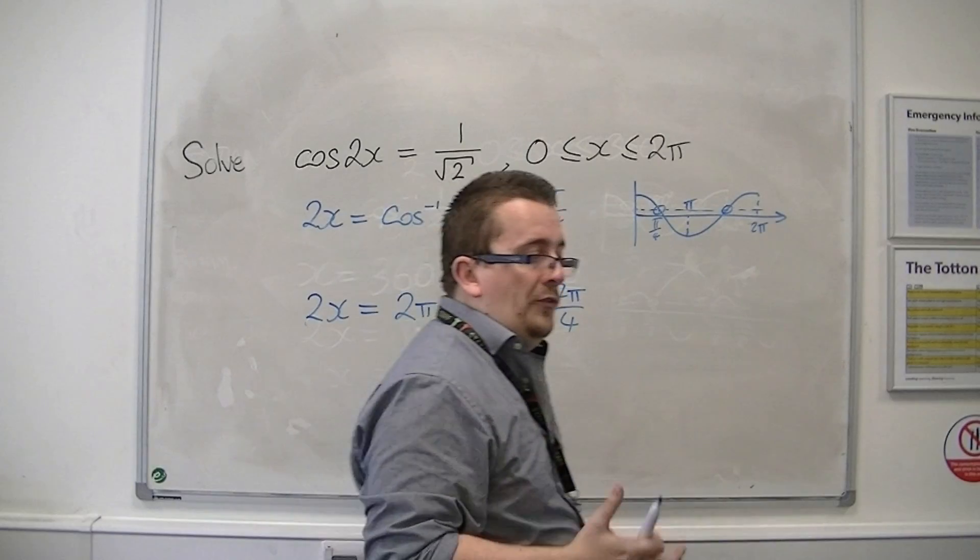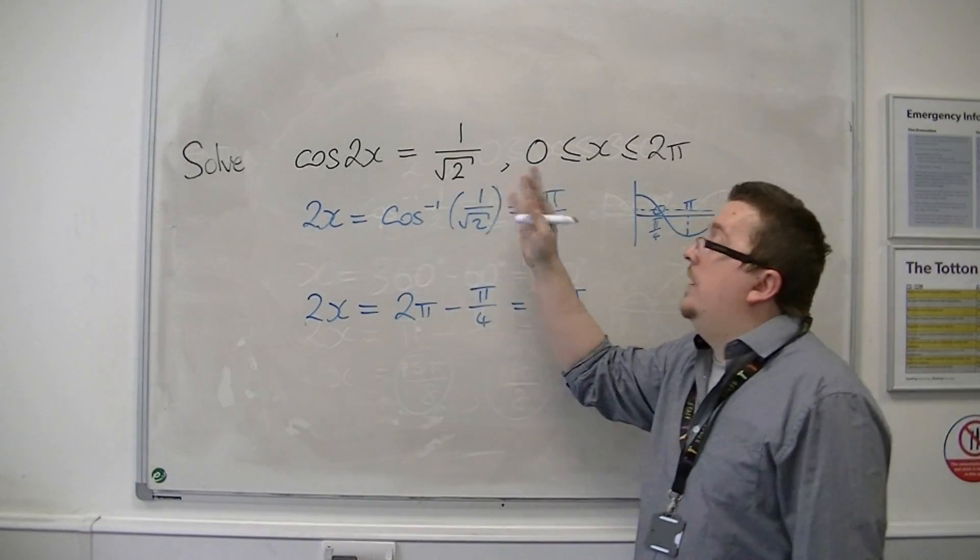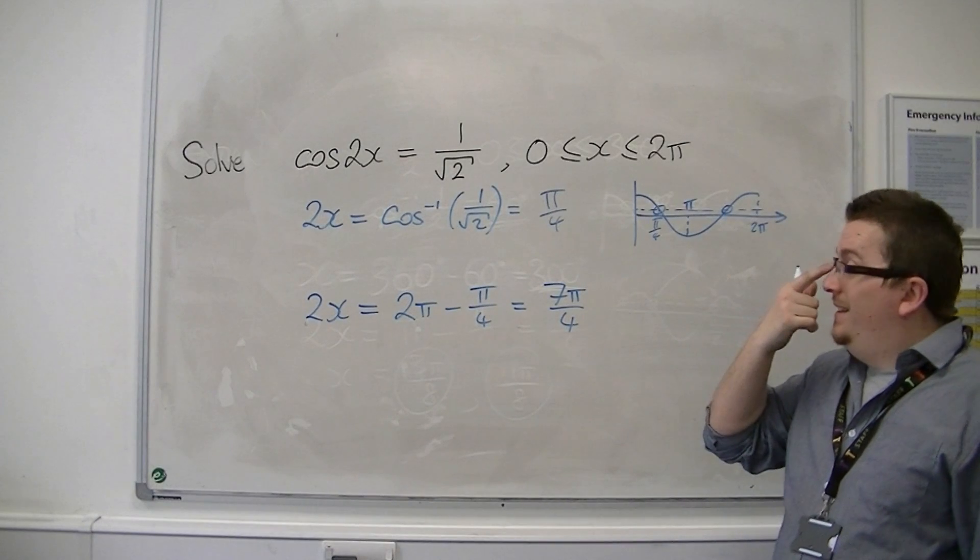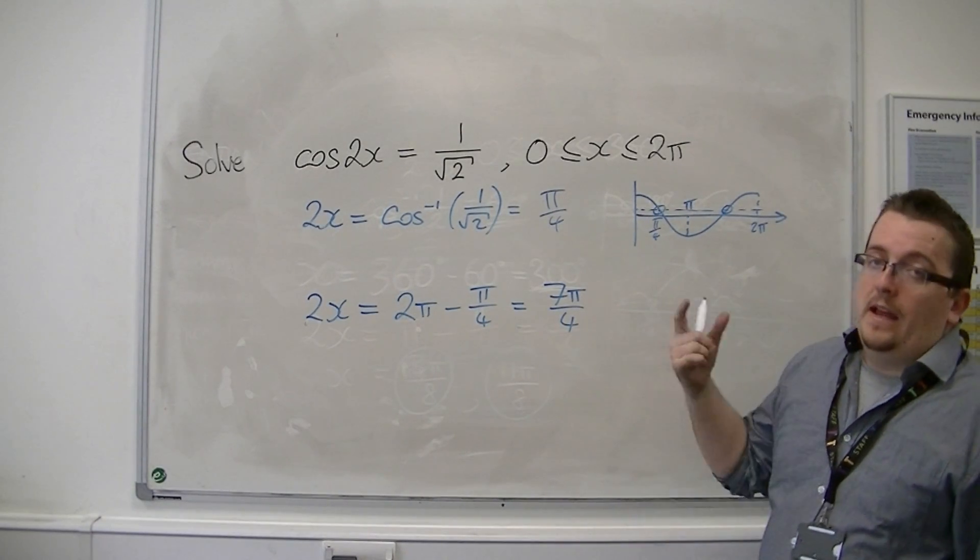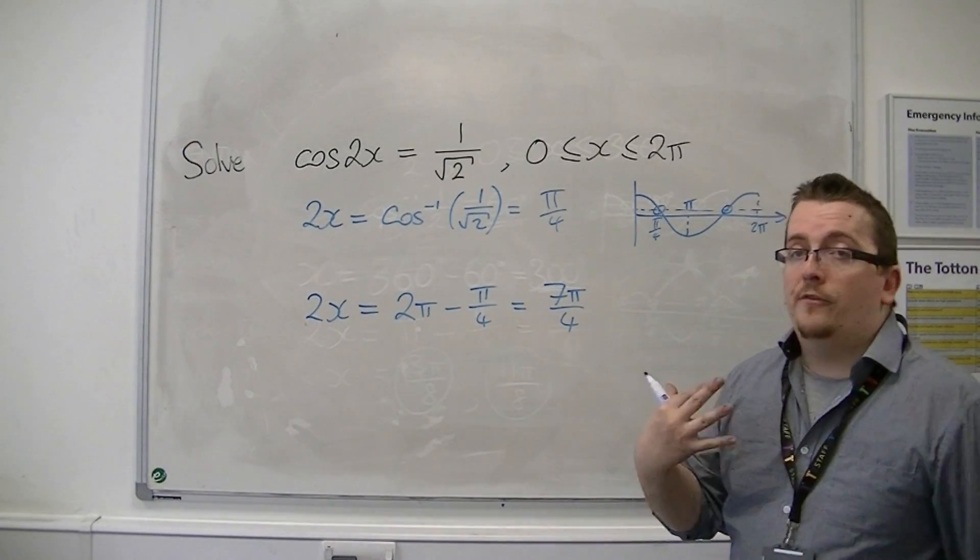so I've now got 7pi over 4. So they are the two solutions that I would get if I was solving cos x equals 1 over root 2. But I'm solving cos of 2x. Now, once again, this is a stretch in the x-direction by a factor of a half.